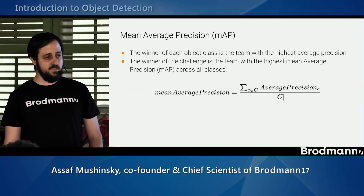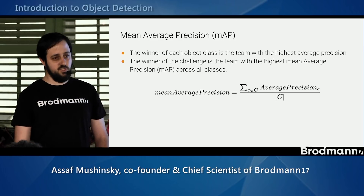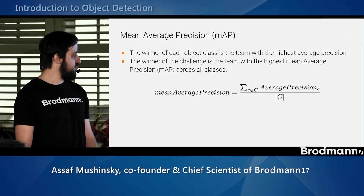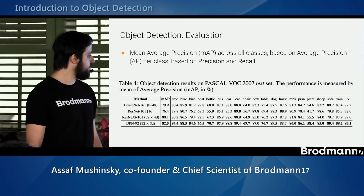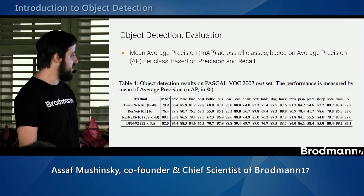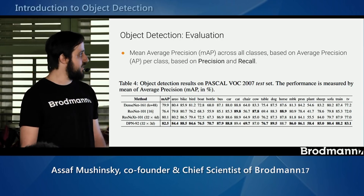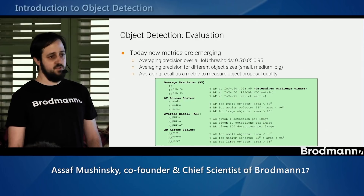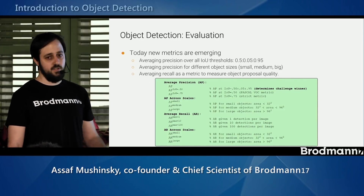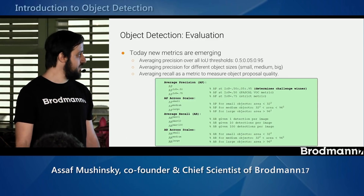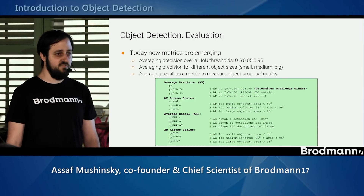In a modern dataset with more than one class, we compute average precision for all classes separately and average them to get the final score: mean average precision (mAP), which we use to compare detectors. As datasets evolved, so did the evaluation. Instead of using an IoU threshold of 50%, we can use higher thresholds or take multiple thresholds and average across them. This new average precision using multiple thresholds is used for evaluation in the COCO dataset.